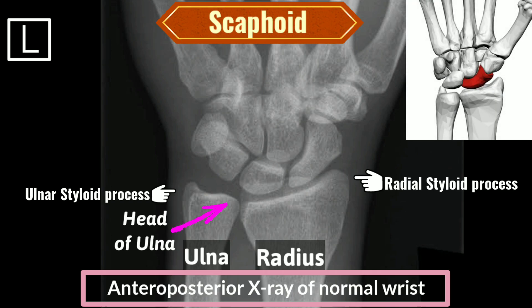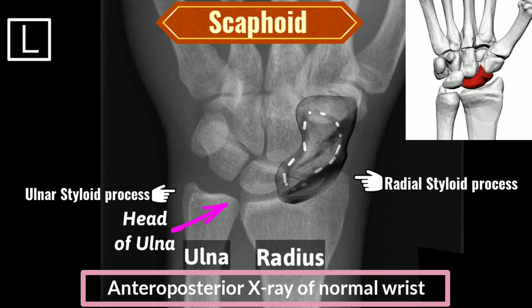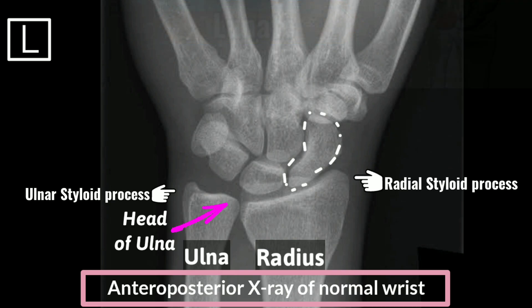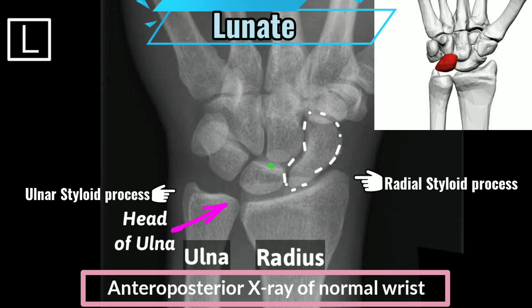Our first carpal is the scaphoid. It articulates with the radius, lunate, trapezoid, trapezium, and capitate, and forms the radial boundary of the carpal tunnel. The next crescent-shaped carpal is the lunate, articulating laterally with the scaphoid, medially with the triquetrum, and distally with the capitate.